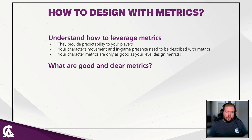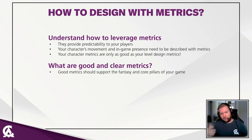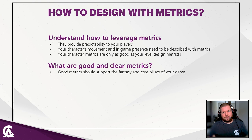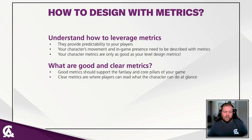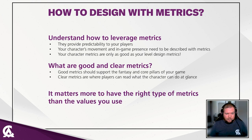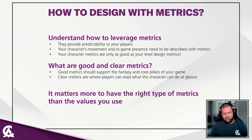Good metrics should support the fantasy and the core pillars of your game. For example, if you have a superhero game and your character jumps, you probably want a jump that is unrealistically high and far — to reinforce that you're a superhero. Clear metrics are where players can read what the character can do at a glance. What matters more is having the right type of metrics than the specific values — values will change before and even after release, but having the metric defined means you can change its value at any time.